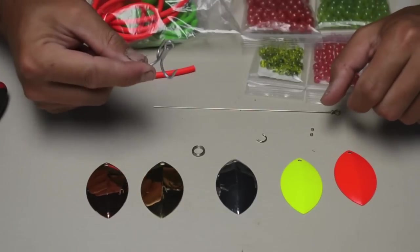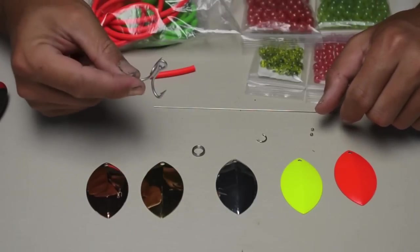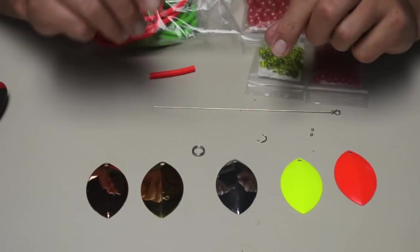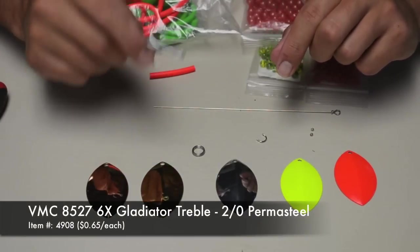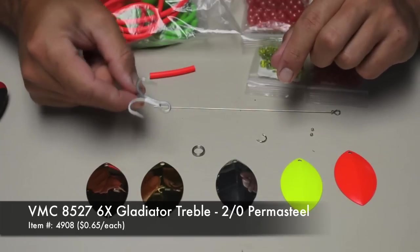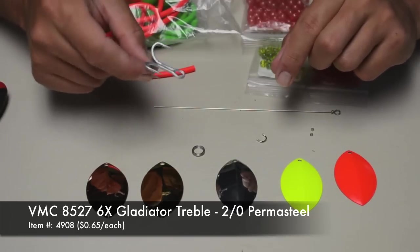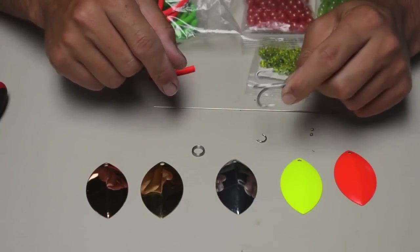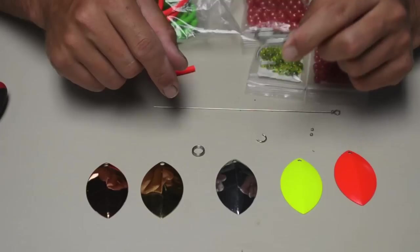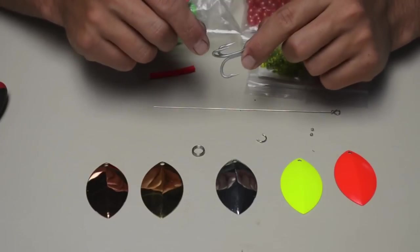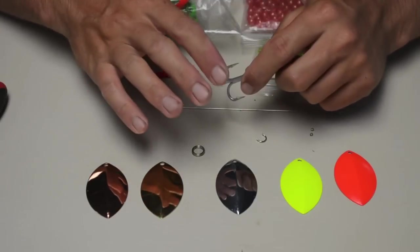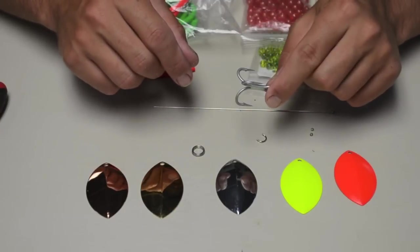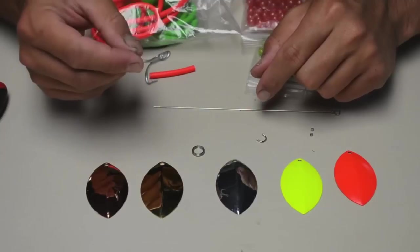On the terminal end, I run a treble hook, although you can also run a single hook. But I prefer trebles for my spinners. I use a 6x VMC Gladiator 2-0 hook coated in permasteel. That means that it's rust-proof, so I can use this in the ocean for trolling or in estuaries like Tillamook Bay, Columbia, Willapa Bay, where you get some saltwater intrusion. If you're only going to be fishing in fresh water, you're fine to go with just the bronze on this. But this is a very robust hook, it's extremely sharp.